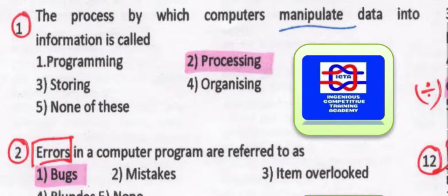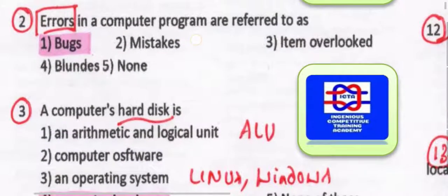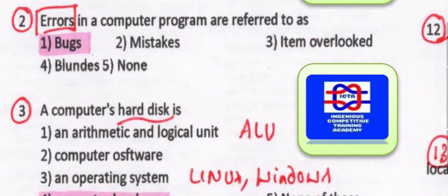Errors in a computer program are referred to as bugs. Don't say those errors are mistakes — they are all bugs. Whatever the errors in computer language, that terminology is bugs.